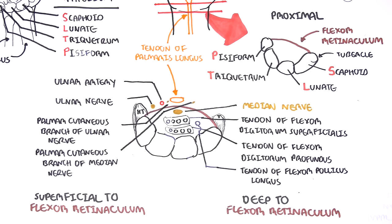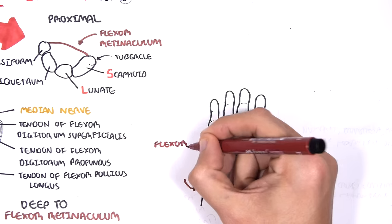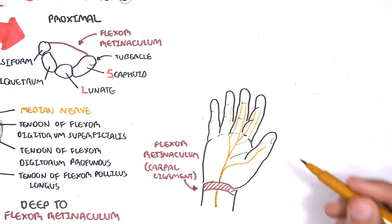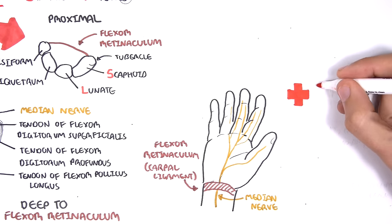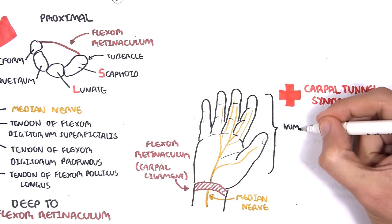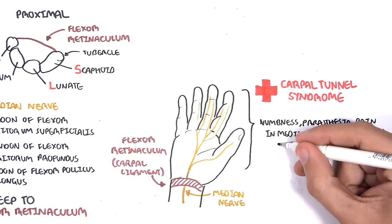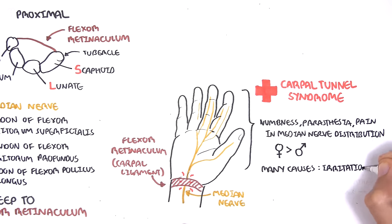Some clinical relevance of the flexor retinaculum and the median nerve: here is the right hand and the flexor retinaculum, also sometimes referred to as the carpal ligament, which makes sense because it literally goes over the carpal bones. Remember the four main groups of structures that run under it, one of which is the median nerve. The median nerve is sensory for the middle, index and thumb region, and also motor for these regions. Carpal tunnel syndrome is where you get compression of the median nerve at the flexor retinaculum, causing numbness, paresthesia and pain in the median nerve distribution. Carpal tunnel syndrome affects females more than men, and there are many causes that can irritate the median nerve.